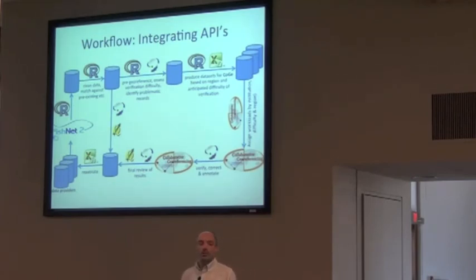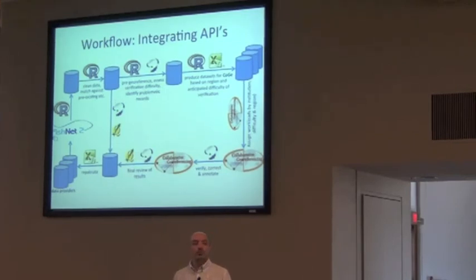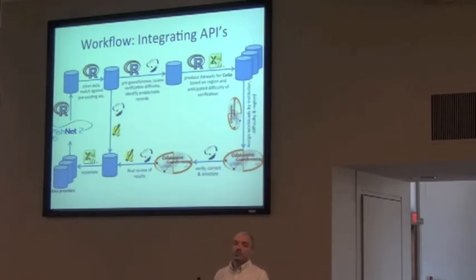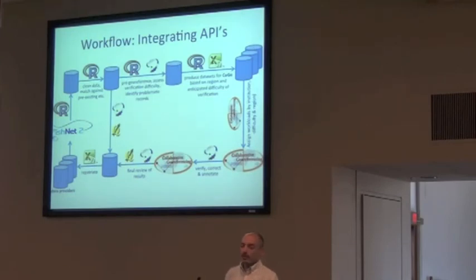We have no guarantee that every provider is going to take back the data. Within FishNet, we will actually be serving georeferenced records that may not exist within those provider databases, so the results of this work don't disappear at the end of the project even if the parent institution hasn't accepted the data yet. In those situations, we'll make it clear to end users of FishNet that the data was georeferenced by this project and has not yet been accepted by that institution.